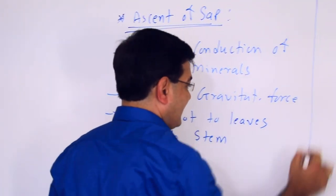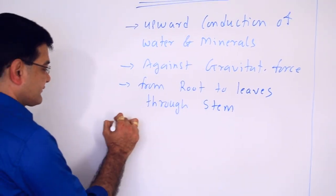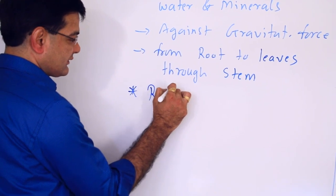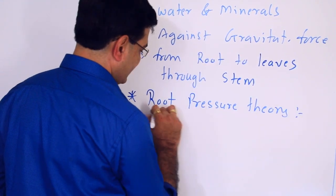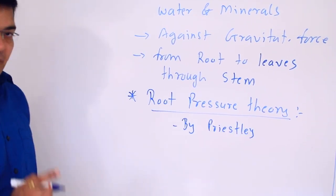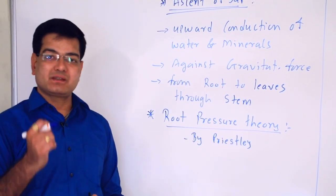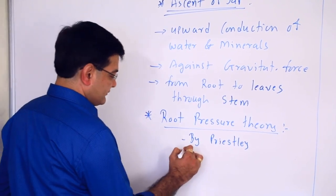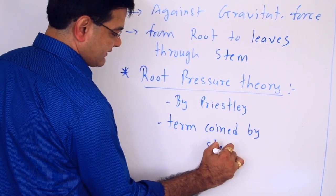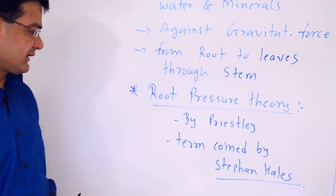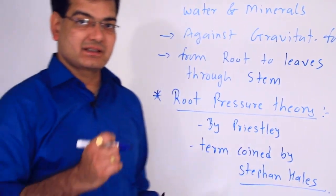Many theories are given to explain the ascent of sap, but one of them is root pressure theory. This root pressure theory was given by Priestley, the scientist who explained the ascent of sap. The term root pressure was coined by Stephen Hales. So what exactly does root pressure mean?